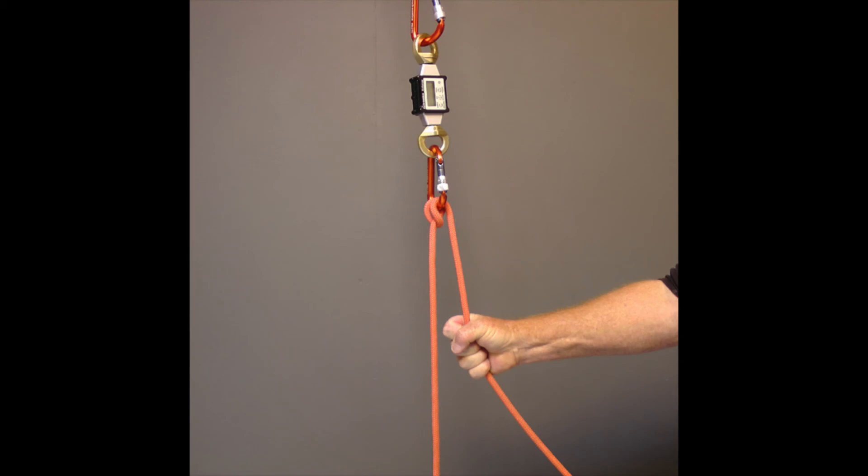A munter hitch will create a tremendous amount of friction, so it obviously wouldn't make any sense to use one in a hauling system. While I was pulling down on the rope, there was 140 pounds on the anchor. However, while lowering, the more friction the better. In my demonstration, the load on the anchor was only 13 pounds while I was lowering. The friction created by the munter hitch at the anchor held a significant portion of the load, so I didn't need to use as much force on my side.